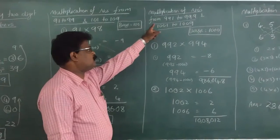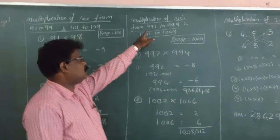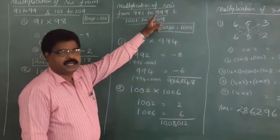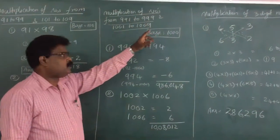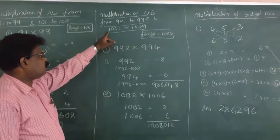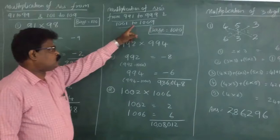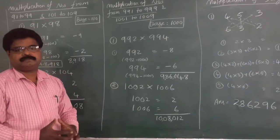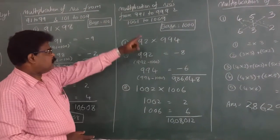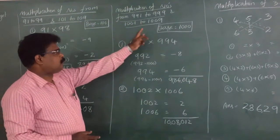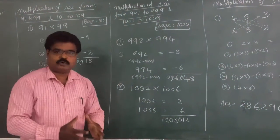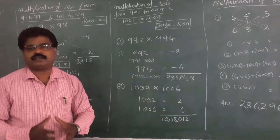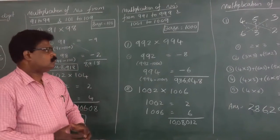Next: multiplication of numbers ranging from 991 to 999 and 1001 to 1009. These numbers are near 1000, so you take the base as 1000.